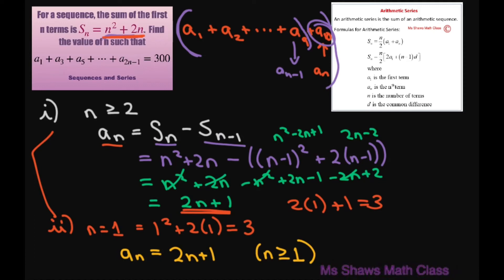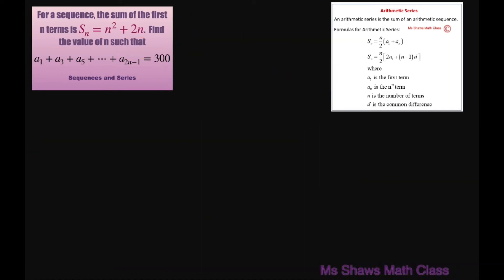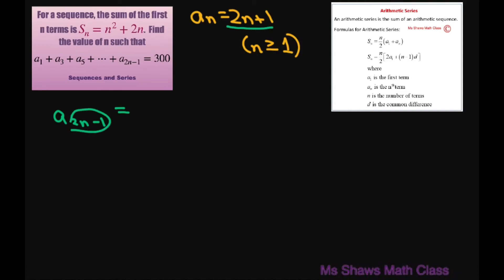Now we need to find a sub 2n minus 1 using our formula. We have a sub n equals 2n plus 1. Everywhere there's an n, we substitute in 2n minus 1. So this becomes 2 times (2n minus 1) plus 1, which equals 4n minus 2 plus 1, which equals 4n minus 1.